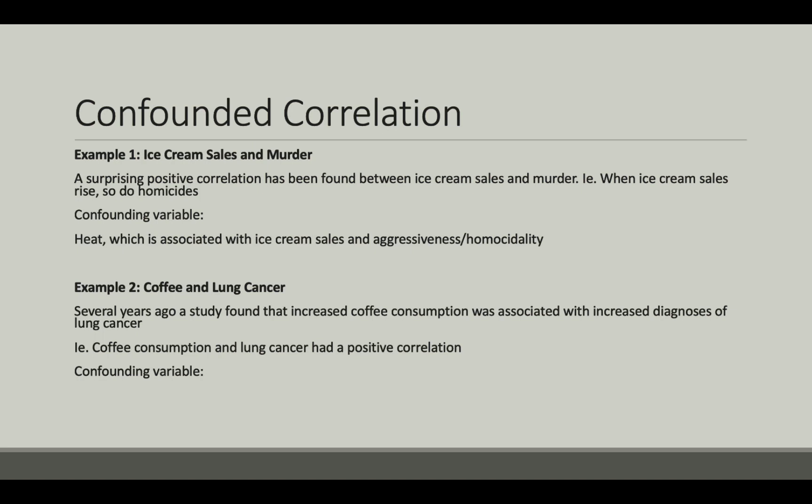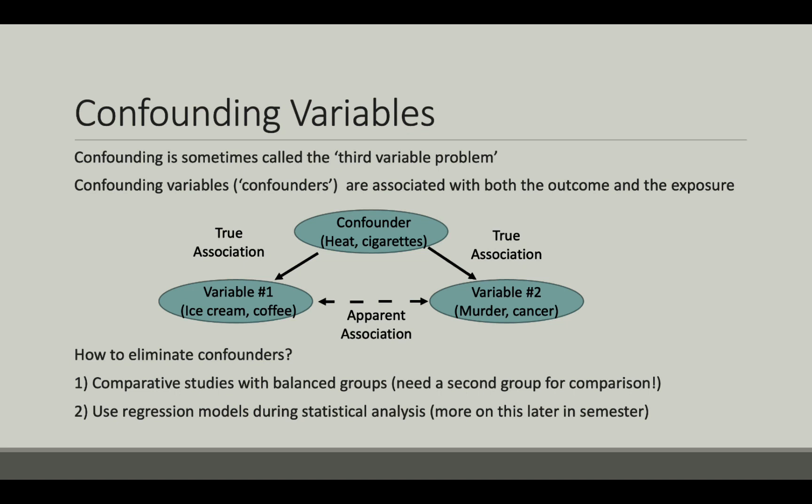In example two, we've got coffee and lung cancer. Several years ago, a study found that increased coffee consumption was associated with increased diagnoses of lung cancer, so coffee consumption and lung cancer had a positive correlation. Can you think of a confounding variable here? Smoking, which was associated with increased coffee consumption and cancer risk. Confounding is sometimes called the third variable problem. Confounding variables, known as confounders, are associated with both of the individual variables and may lead us to believe that the two variables have a relationship with each other, which may actually not be the case.